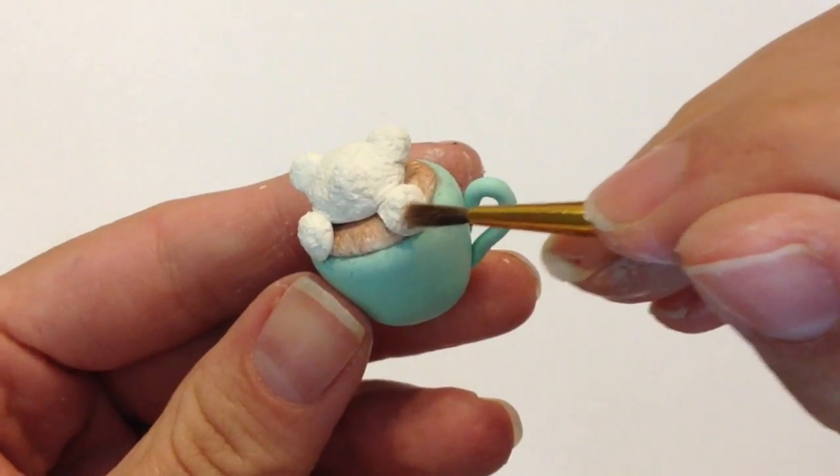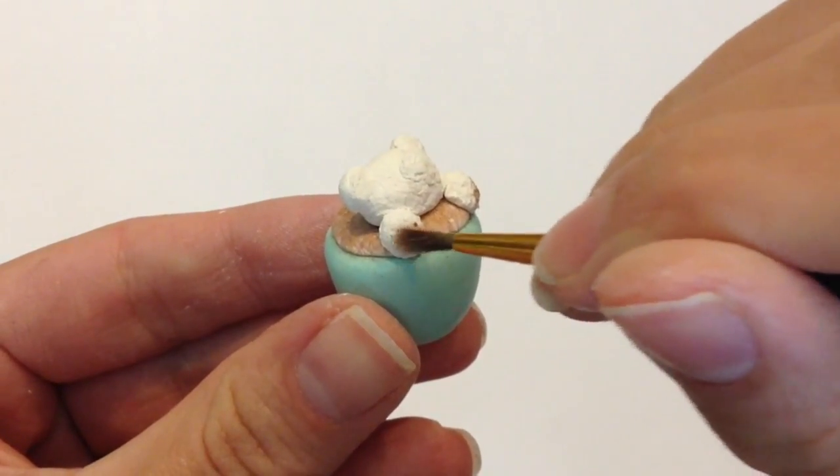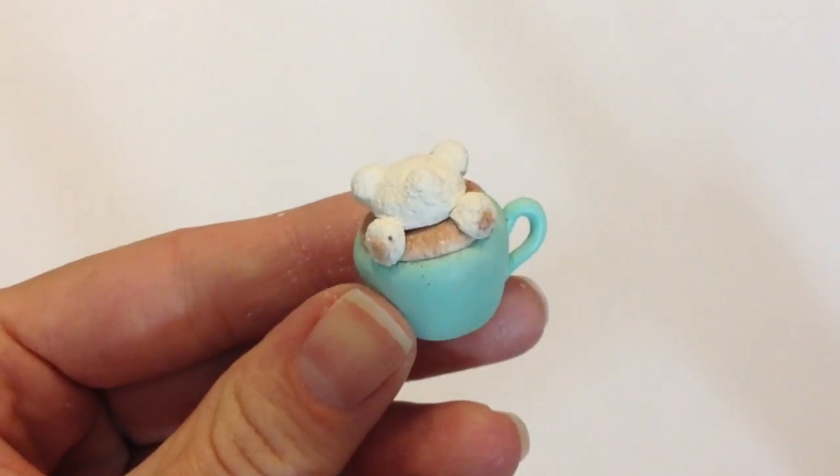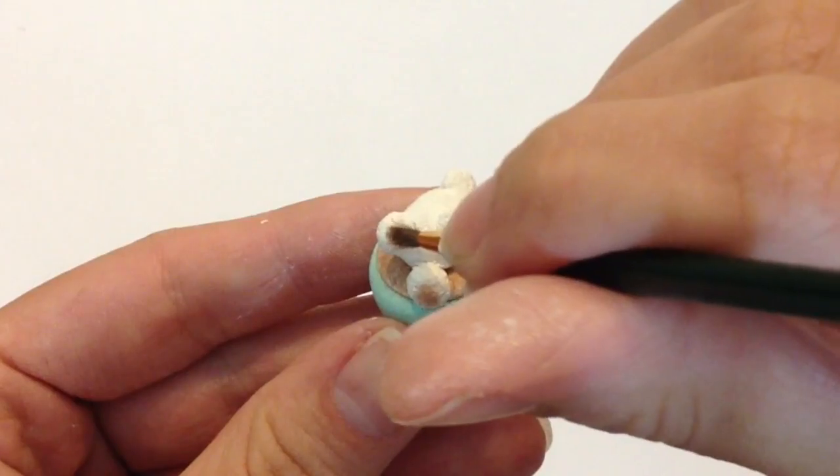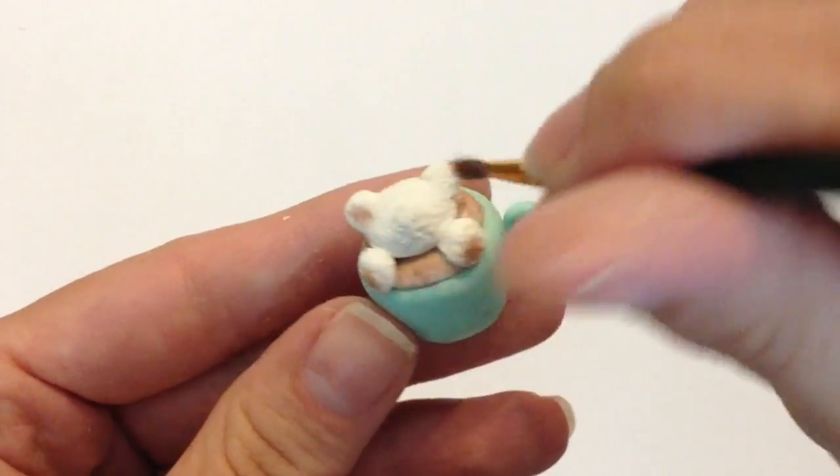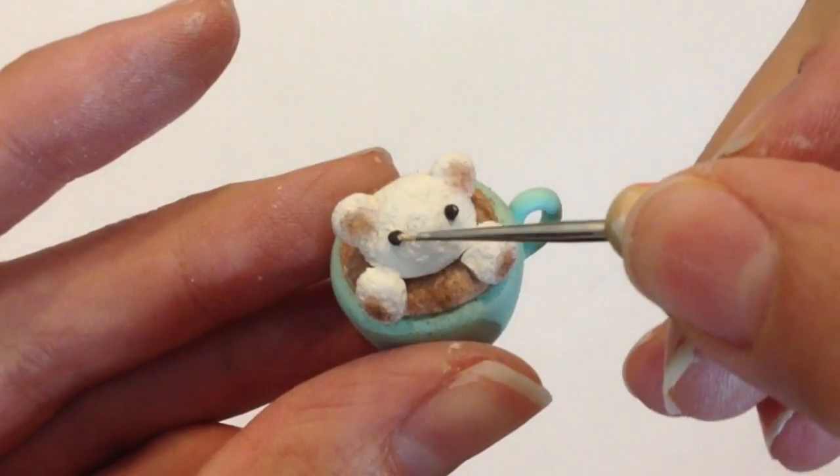Taking your chalk pastels again, color the center of his paws, his ears, and his face as well. Make sure you take some extra time to be very careful with this step, because the last thing you want is to get some brown chalk where you don't want it. Chalk has a lot of fallout, so make sure you do this very carefully and slowly.